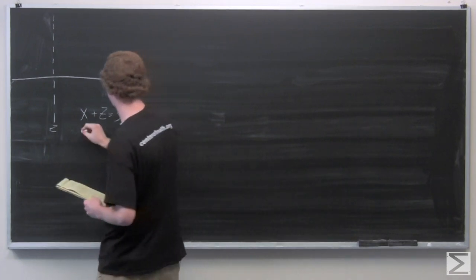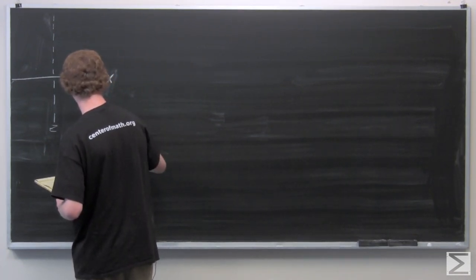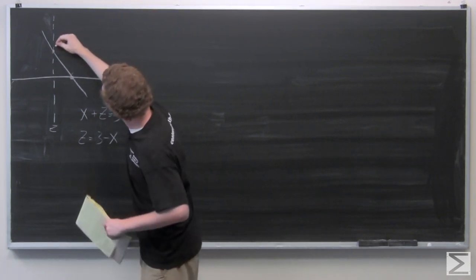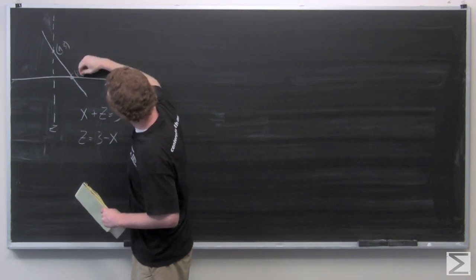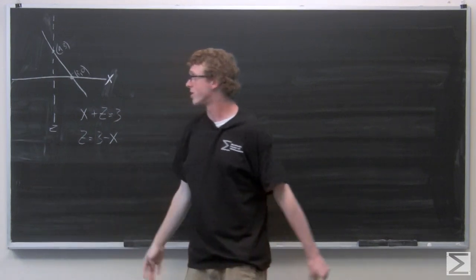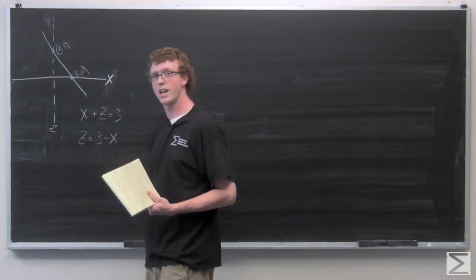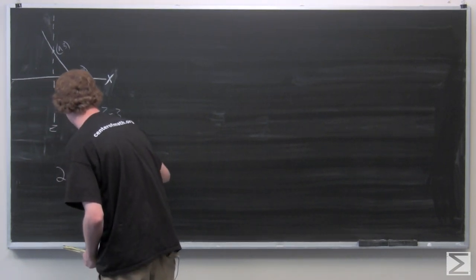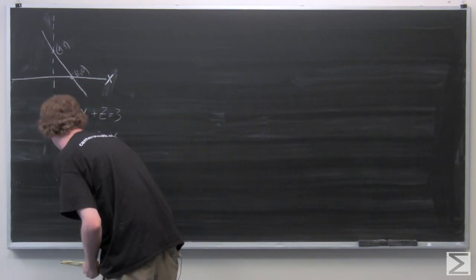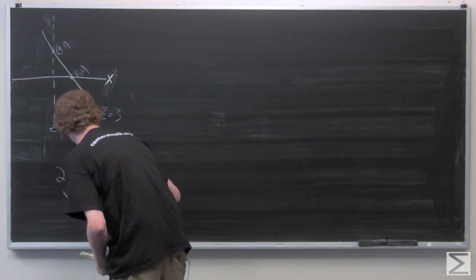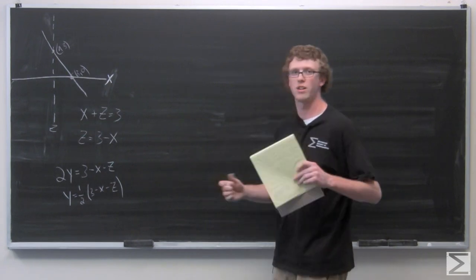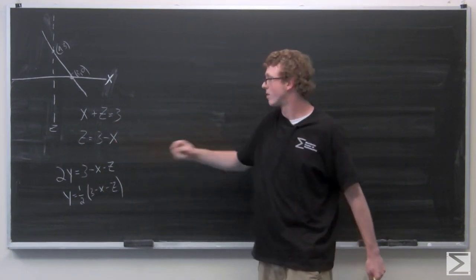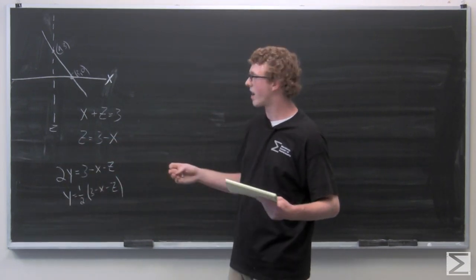Solving for z, we have a line with intercepts at (0, 3) and (3, 0). Now we solve our original function for y to determine the upper bound: y equals one-half times the quantity (3 minus x minus z). That's our upper bound for y. For z, the upper bound is three minus x. And the upper bound for x is just three, with all lower bounds zero.